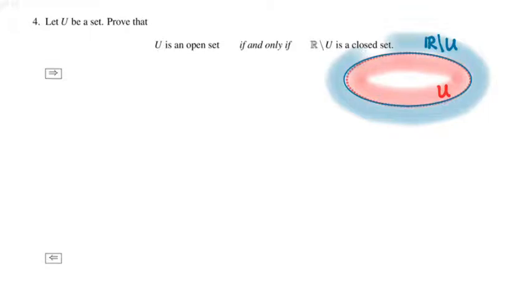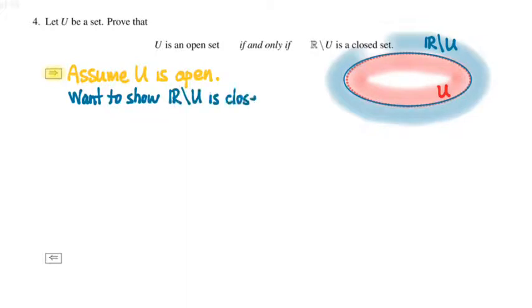But we have two things to prove, because this is an if and only if statement. So let's talk a little bit about how you might set up each of these directions. For the forward direction, we can assume that U is an open set, so that every point inside U is an interior point of U. We then need to show that the complement, R minus U, is a closed set. So that means that we need to show that every accumulation point of the complement, R minus U, belongs to the set R minus U.